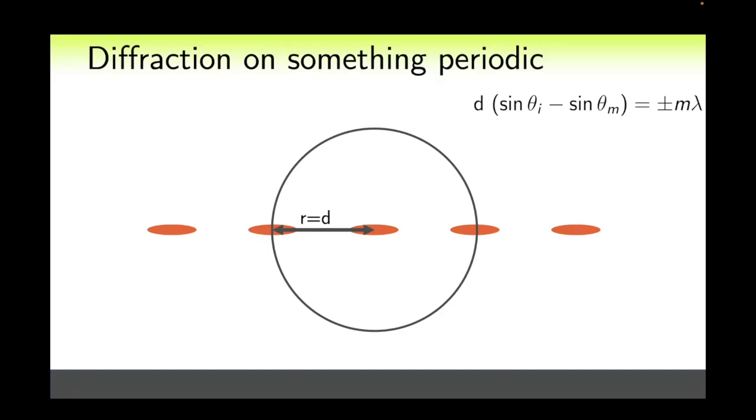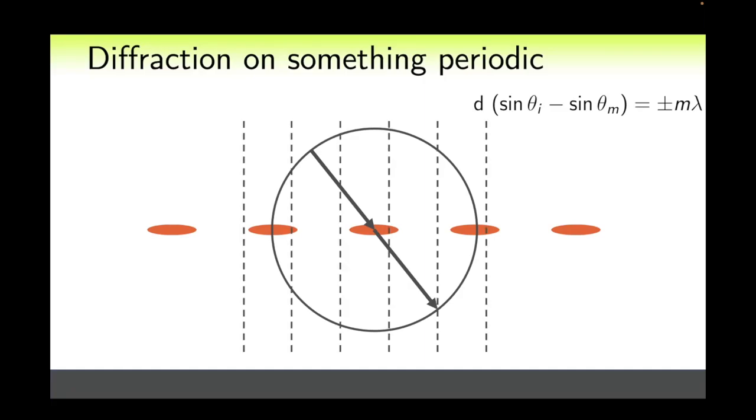Let's consider some periodic structure with period d. We draw a sphere with a radius equal to the period of the structure. We draw the incident and transmitted waves with diffraction orders we are interested in. Then we draw vertical lines through the point where the transmitted wave intersects the sphere, spaced by lambda. Diffraction orders will be in those directions where our vertical lines intersect with the circle. And that's it. You can check that this construction is simply analogous to the condition for the maximum.